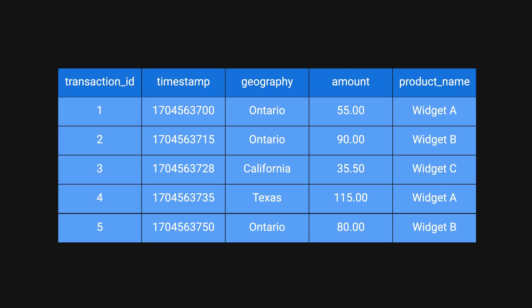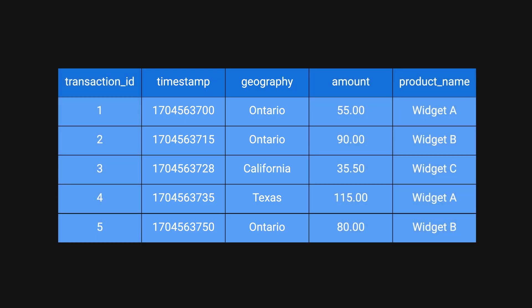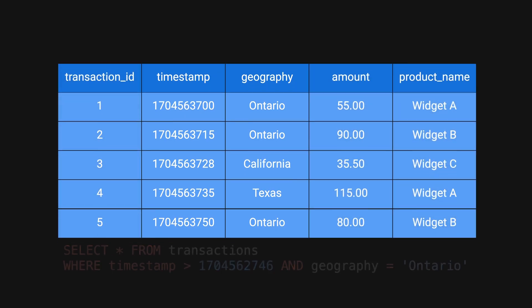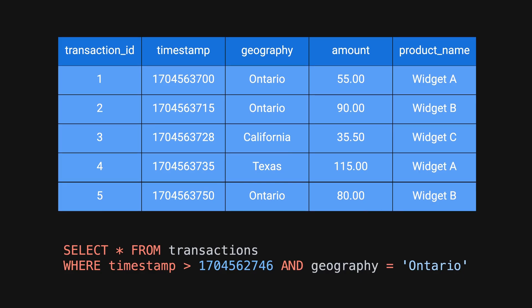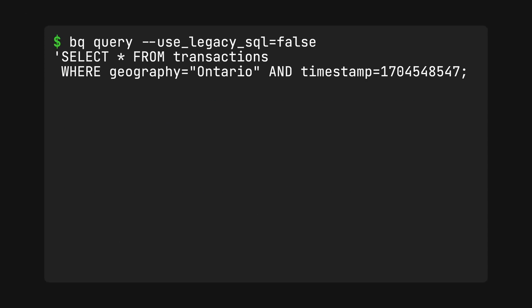Clustering means that you are sorting your data based on one or more columns in your table. These columns are usually the fields defined in the where condition. For example, using the previous query, we can cluster on the columns timestamp and geography. By doing so, BigQuery will only scan relevant data within the specified conditions, resulting in a significant reduction in the amount of data being scanned.